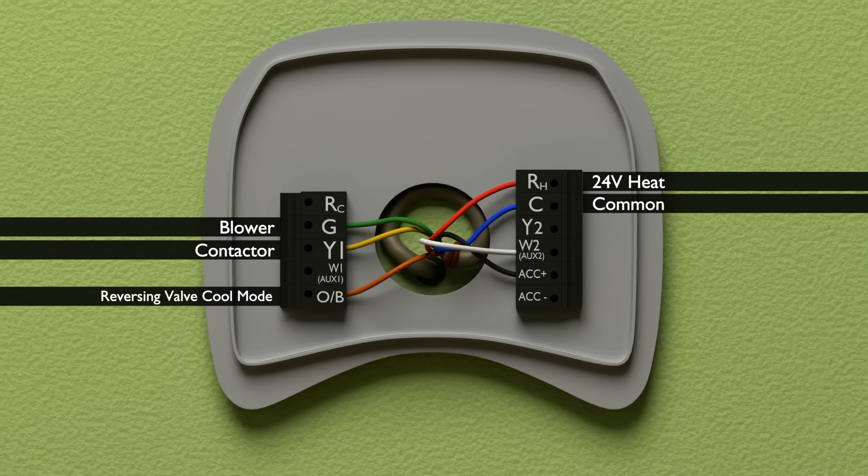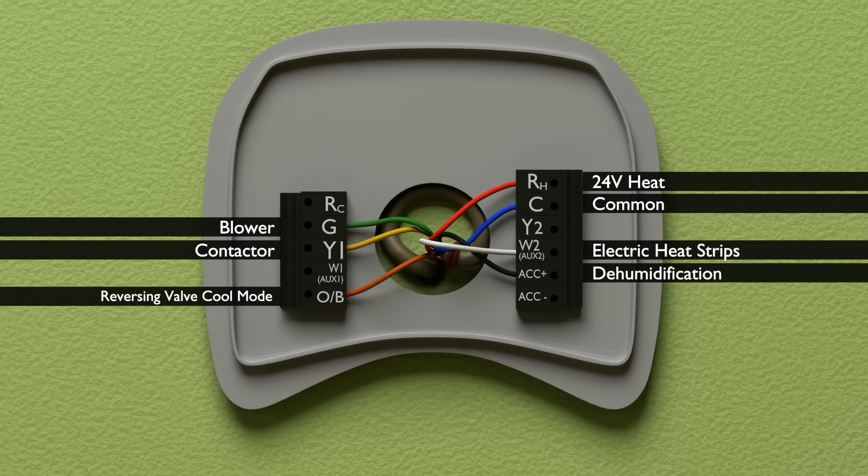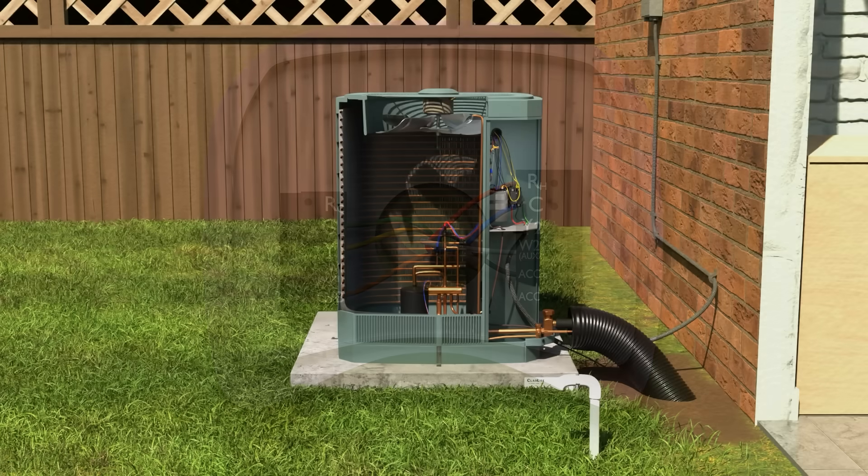C is for common, which is the path back to our transformer. W2 or aux, auxiliary heat, is our electric heat strips. And in this case, we're using the ACC plus setup for dehumidification. This is set up within the menu of the thermostat.